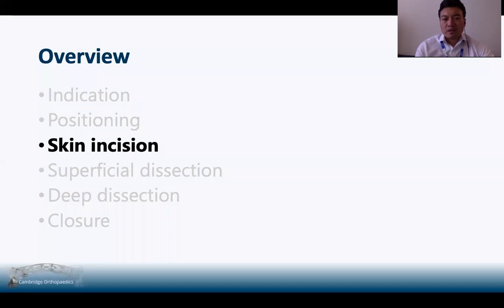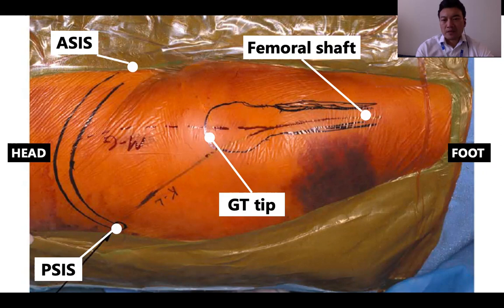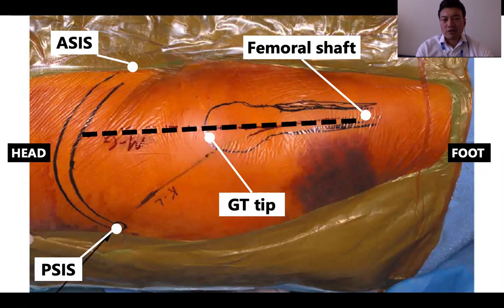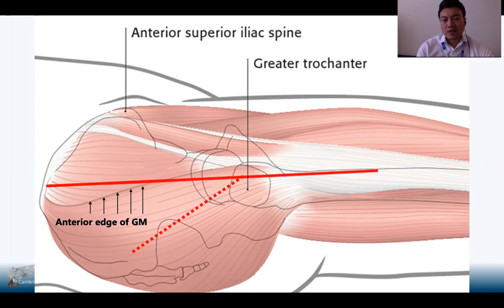In terms of the skin incision, the bony landmarks include the femoral shaft, the GT tip at the front, and the anterior superior iliac spine and posterior superior iliac spine at the back. The skin incision for the modified Gibson approach is a straight incision. It can start from the iliac crest and go all the way down to the femoral shaft. The straight incision makes it much easier to identify the anterior edge of gluteus maximus.